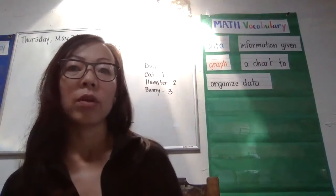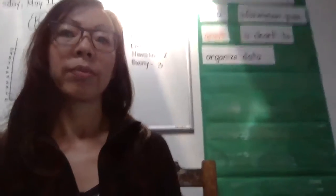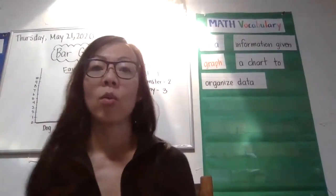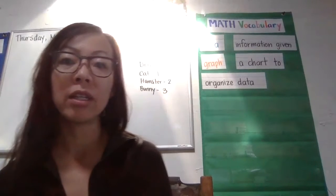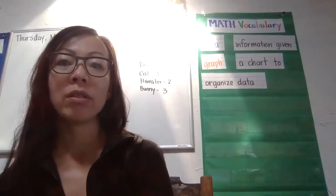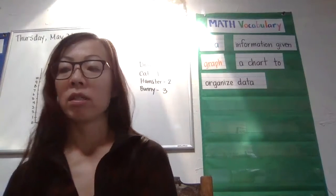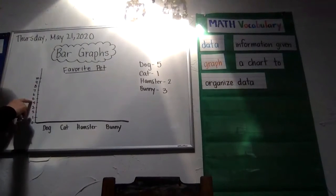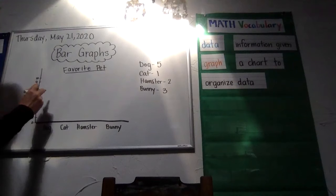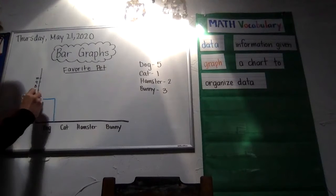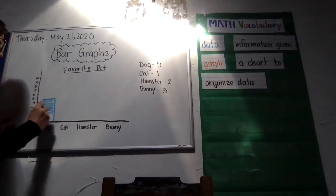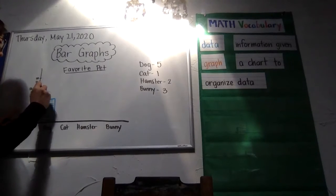Let's say we took a vote. Five people voted for dogs, one person voted for a cat, two people voted for hamsters, and three people voted for bunnies. We'll start with the dog. If five people voted for dogs, we find the five on our bar graph and draw a line and fill in our bar. And we write five above it.